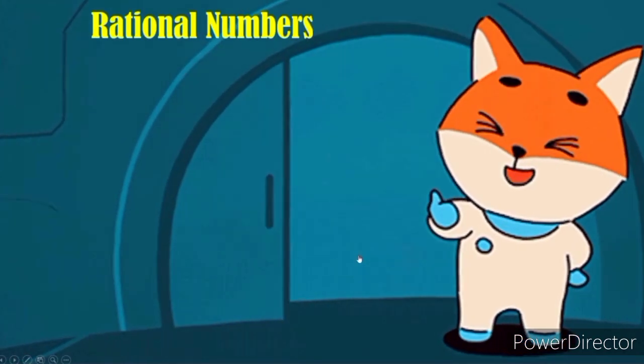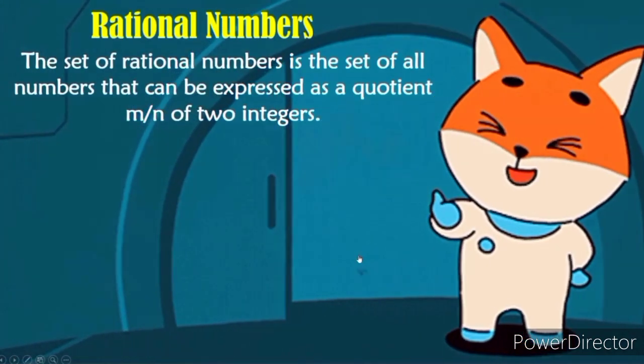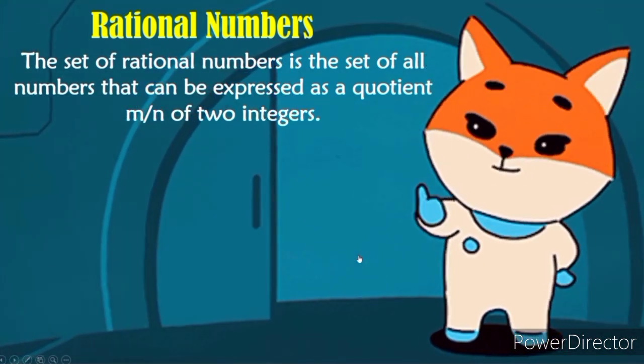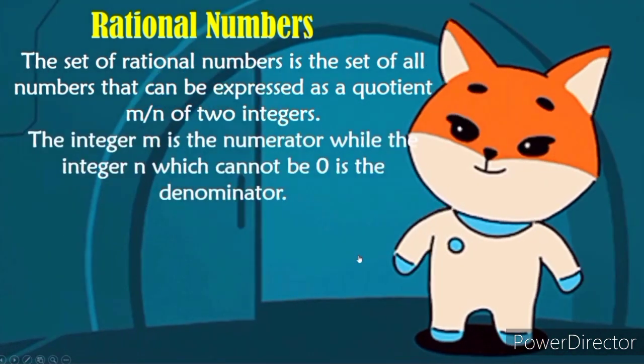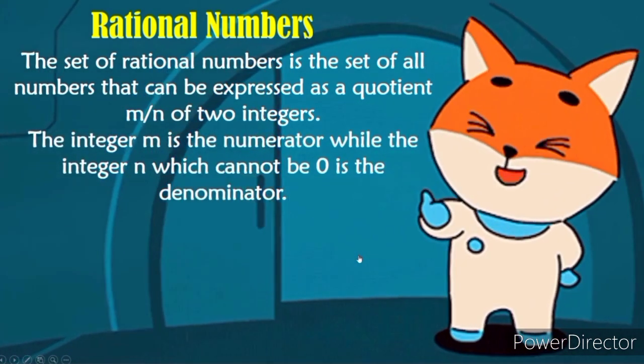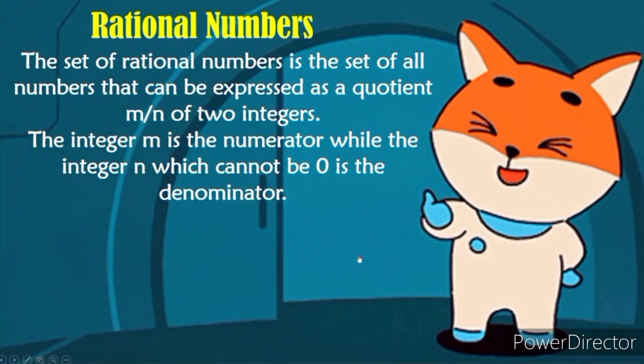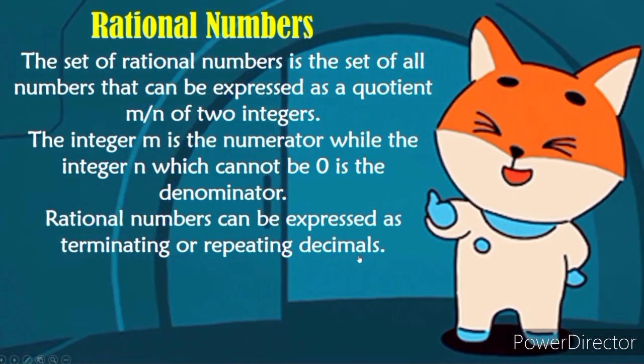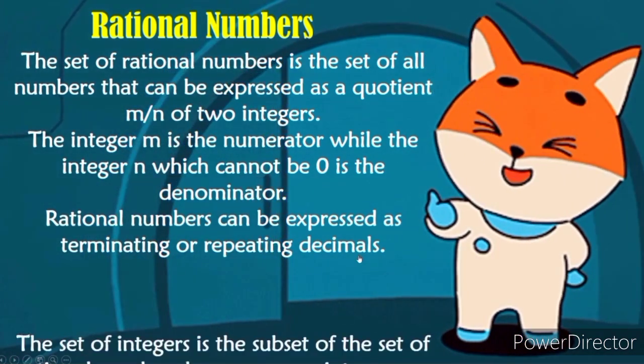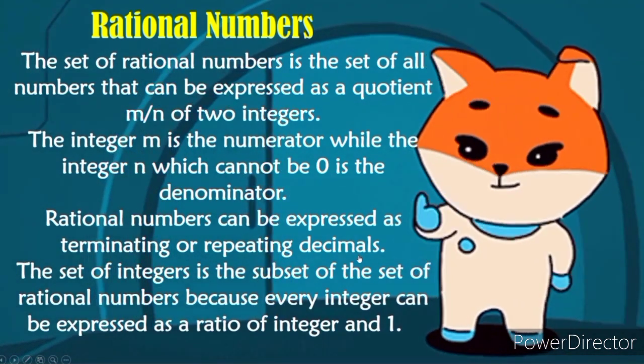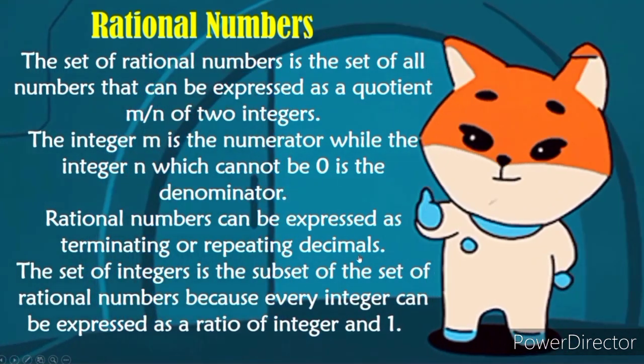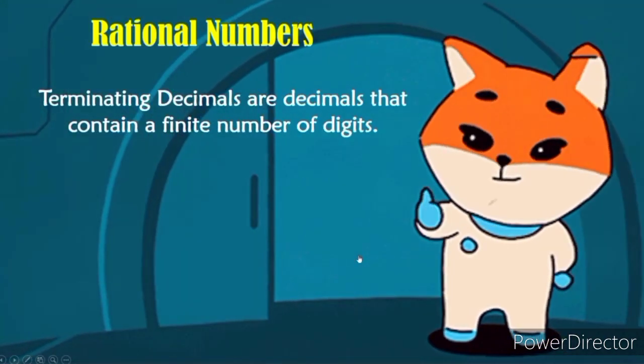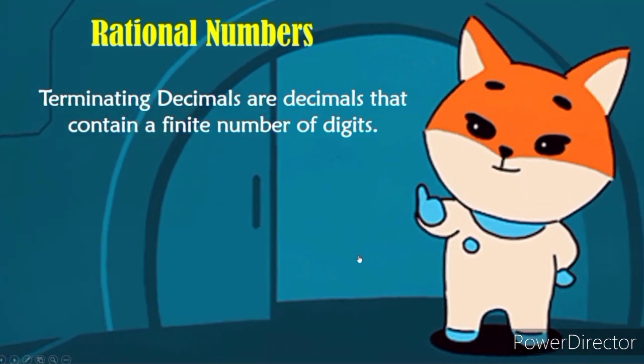Now let's identify rational numbers. The set of rational numbers is the set of all numbers that can be expressed as a quotient M over N of two integers. The integer M is the numerator while the integer N which cannot be 0 is the denominator. Rational numbers can be expressed as terminating or repeating decimals. The set of integers is the subset of set of rational numbers because every integer can be expressed as a ratio of integer and 1. Terminating decimals are decimals that contain a finite number of digits.